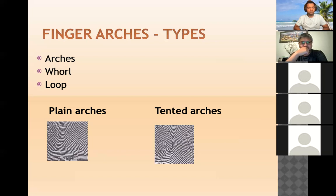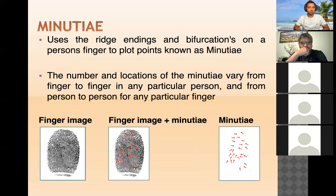The second type is whorls, which account for about 25 to 35 percent of the total population — the ridges form a circular pattern rather than tents. The third type is loops, which make up about 60 to 70 percent of the population. Almost everyone has this kind of pattern; ridges form elongated loops. These three types are what make one fingerprint different from another.